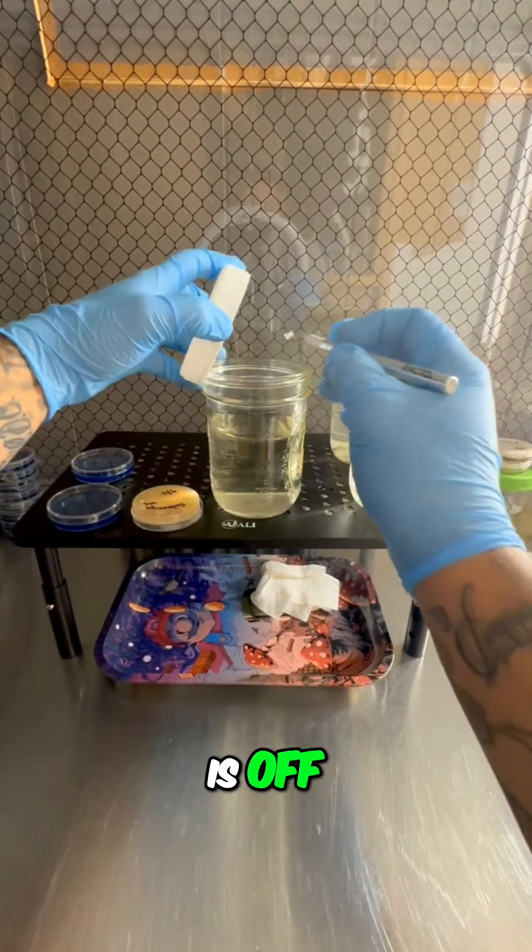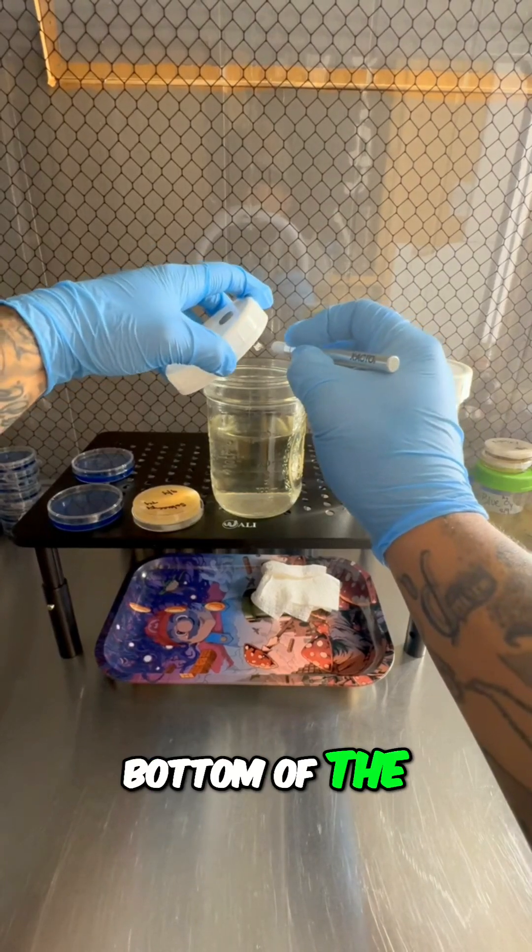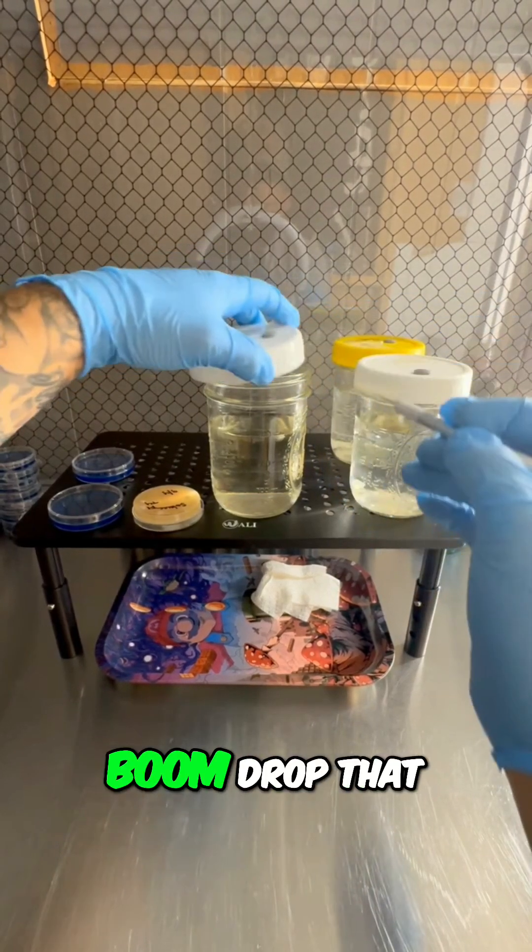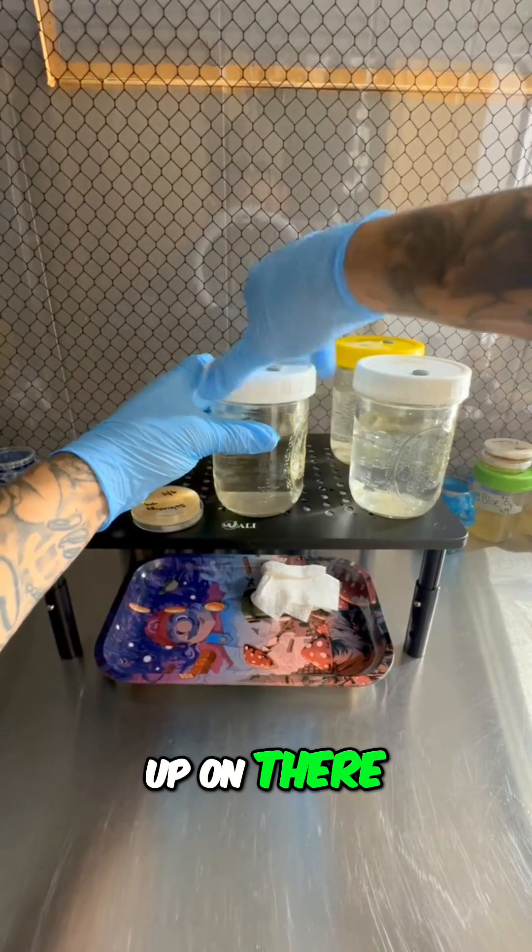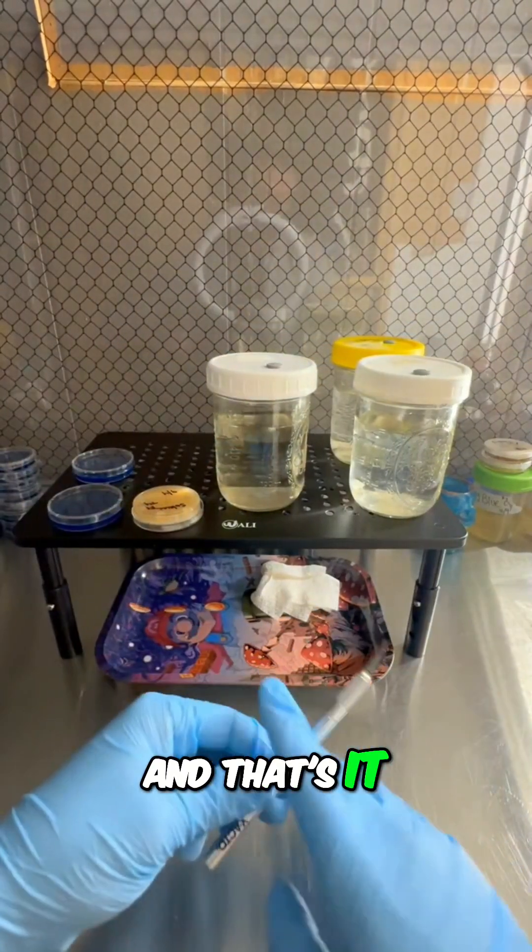Make sure your lid is off and you can use the bottom of the lid if you want. Drop that in there, go ahead and twist it up on there. That's it.